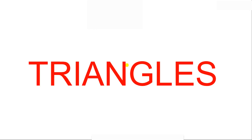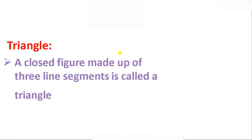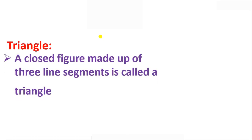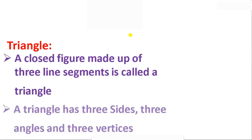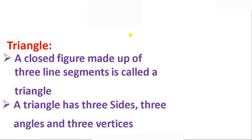So first, what is a triangle? A triangle is a closed figure made up of three line segments. A triangle has three sides, three angles, and three vertices.